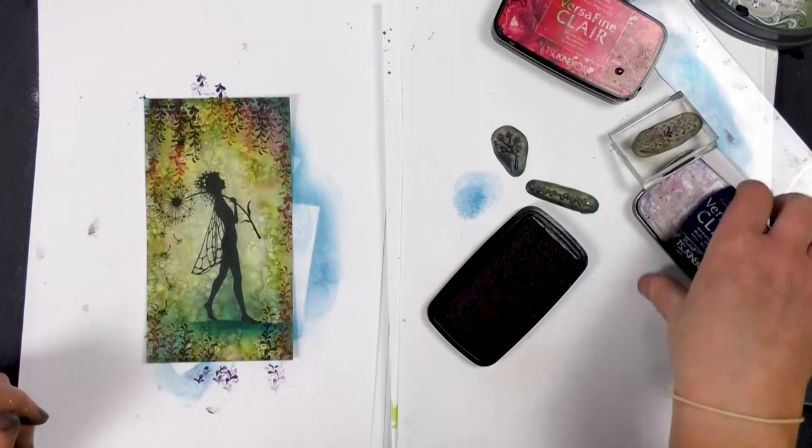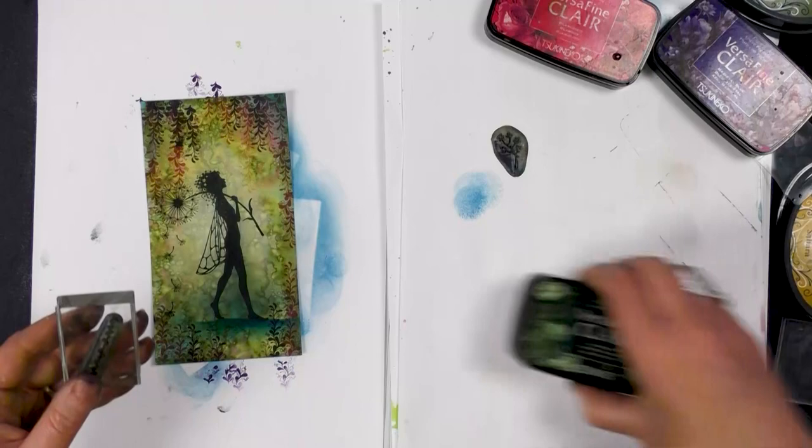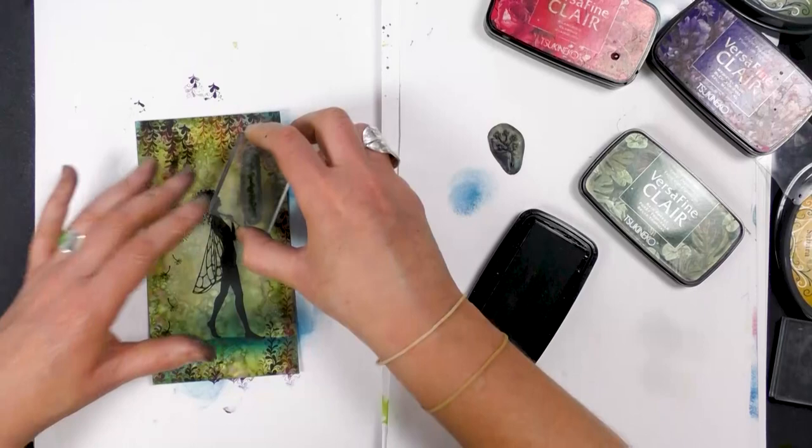Let's just change our foliage now. Another colour. Let's go with Rainforest. I'm going to stamp off first.